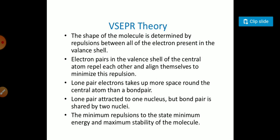According to this theory, the shape of the molecule is determined by the repulsion between all the electrons present in the valence shell. The electron pairs in the valence shell of the central atom repel each other and align themselves to minimize the repulsion. The lone pair electrons take up more space around the central atom than the bond pair. The lone pair is attracted to one nucleus, but bond pair is shared by two nuclei. The minimum repulsion leads to the state of minimum energy and maximum stability of the molecule.